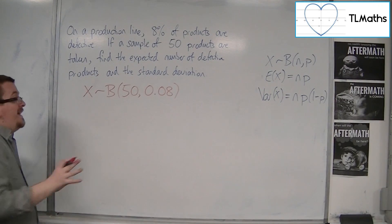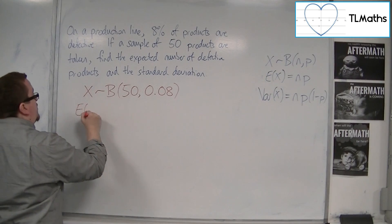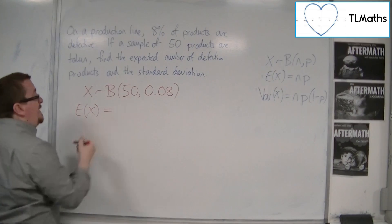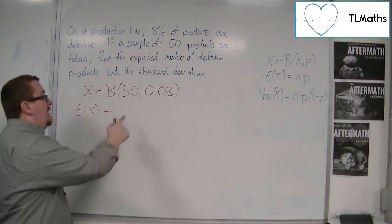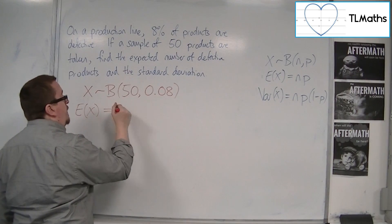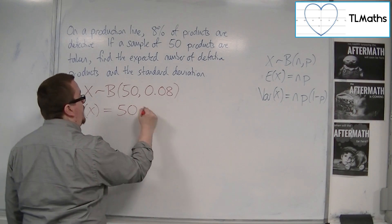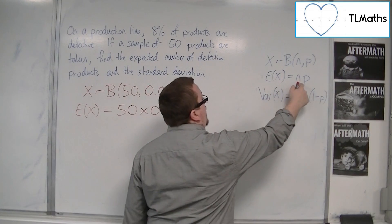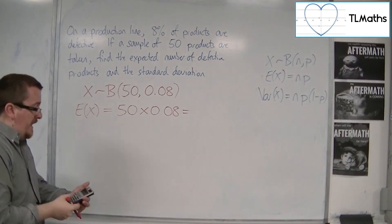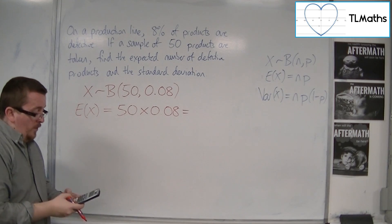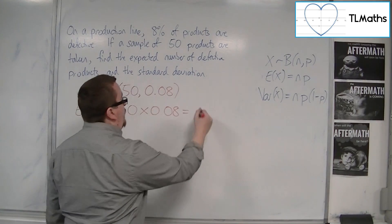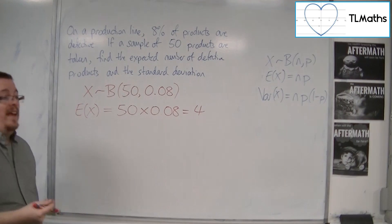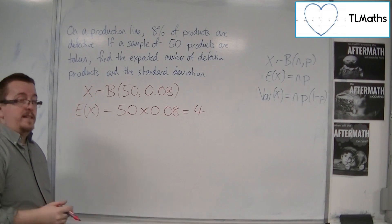So the expected value, or the expected number of products to be defective, would be out of the 50, 8% I would expect to be defective. So 50 times 0.08, or N times P. So 50 times by 0.08 gets me 4. So that's how many I would expect to be defective out of the 50.